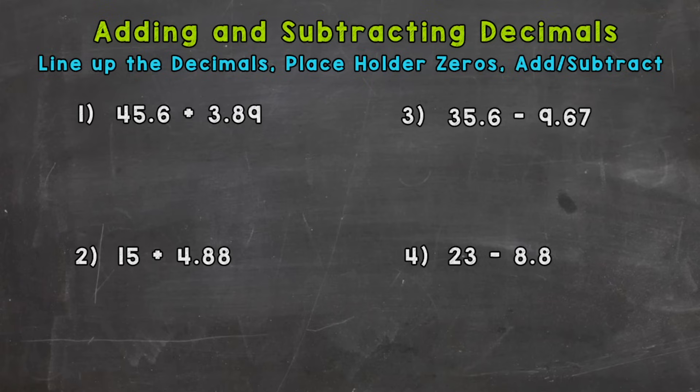On your screen you see four problems, two addition and two subtraction. We're going to work through these four together, and if at any point you want to try a couple on your own, feel free to press pause, solve the remaining problems or whichever problems you want to solve, press play when you're ready and check your work with mine. At the top of your screen in blue you see the steps to adding and subtracting decimals, so keep those in mind as we work through.